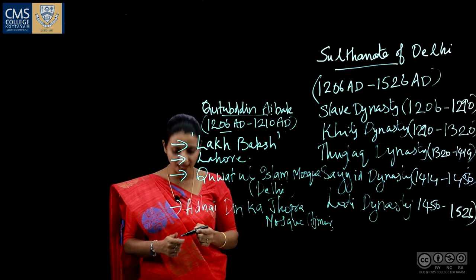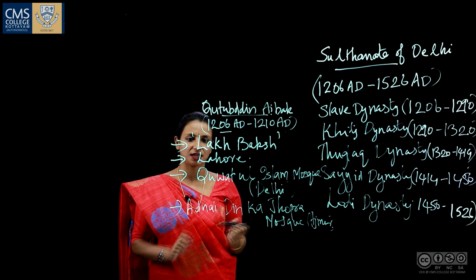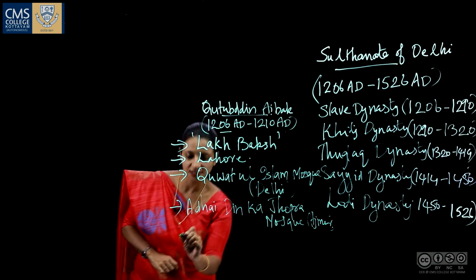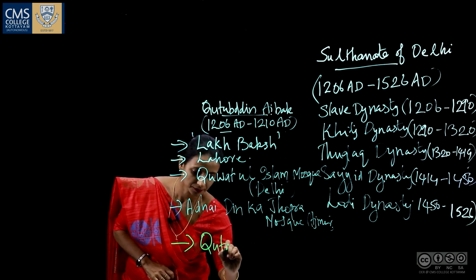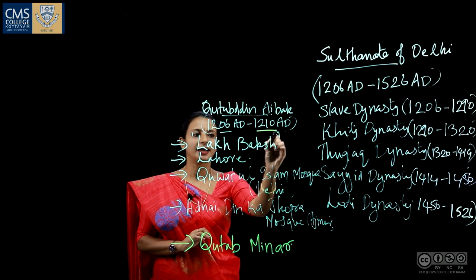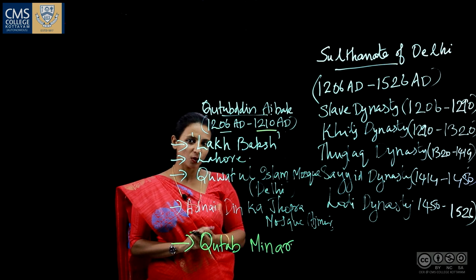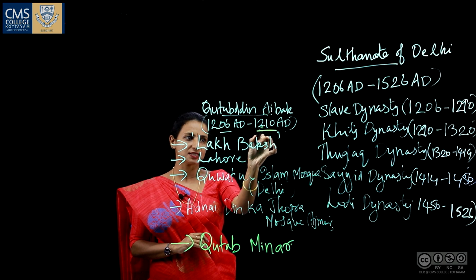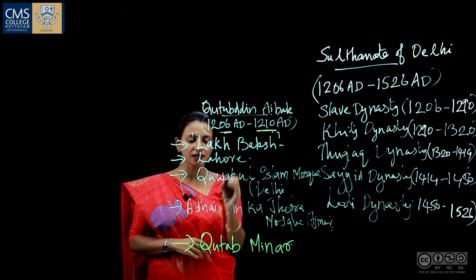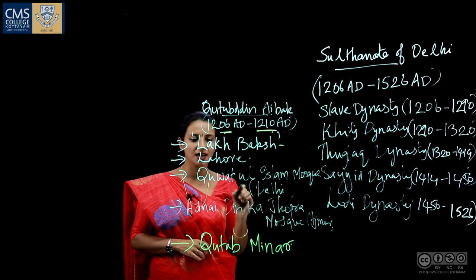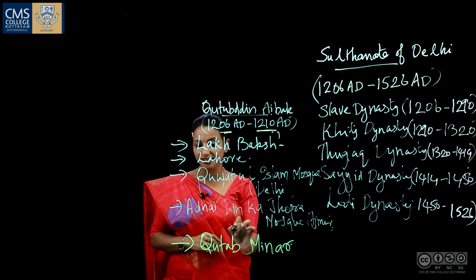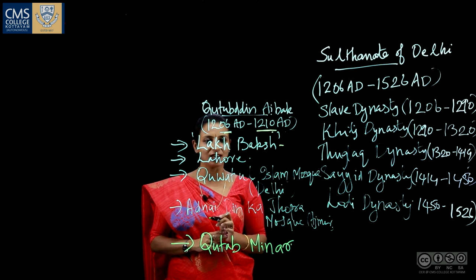Aibak also started the construction of the Qutub Minar in memory of the Sufi saint Khwaja Qutbuddin Bakhtiyar Kaki. However, he could not complete the construction, as he died in 1210 AD while playing a game called Chaugan, or Polo. Qutbuddin Aibak ruled for only four years.